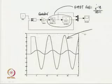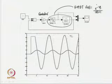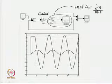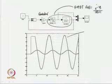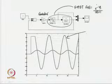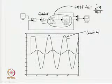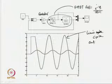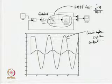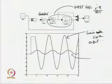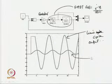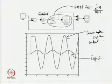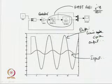At exactly a gain of 8.5, we do get sustained oscillatory output of this form — a limit cycle output. The plot also shows the input signal of the system; this is the input and this is the output.